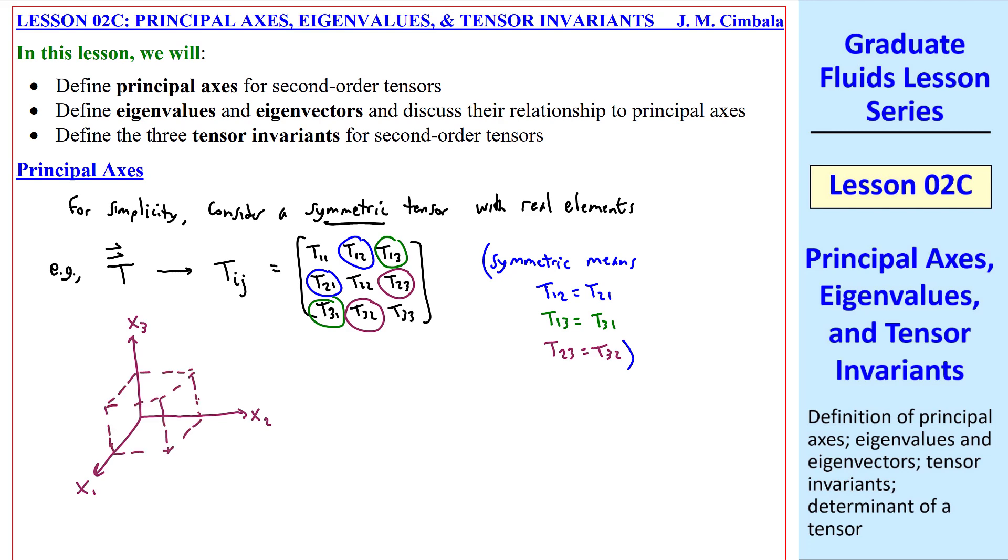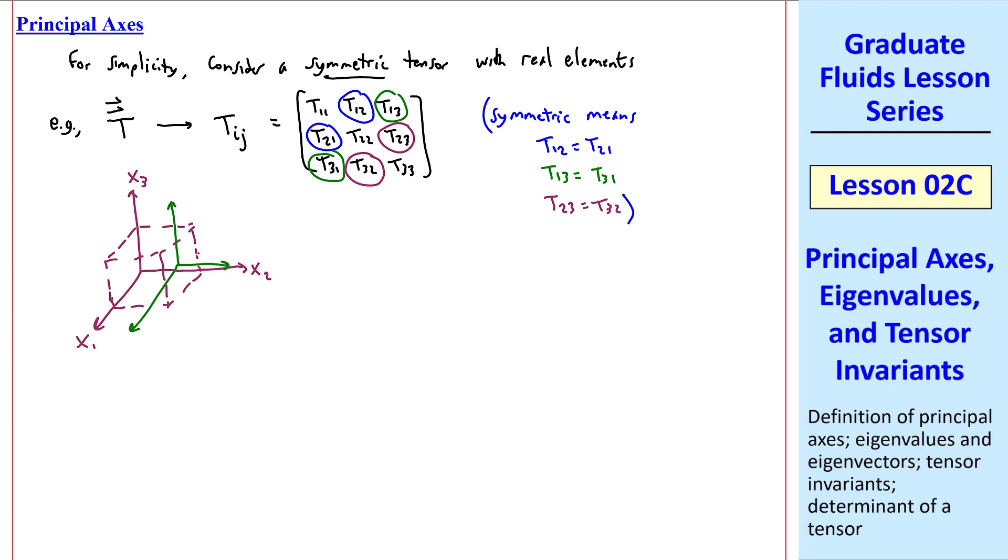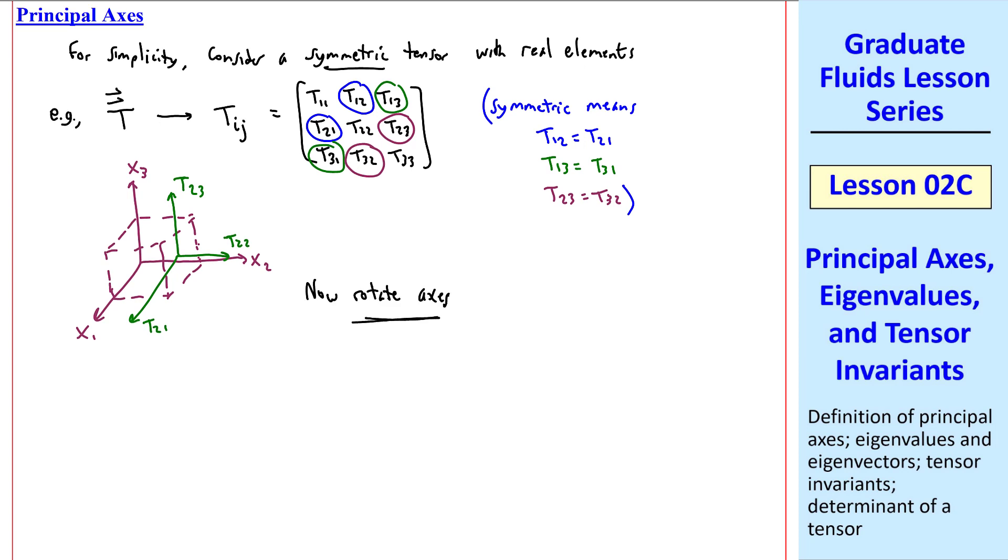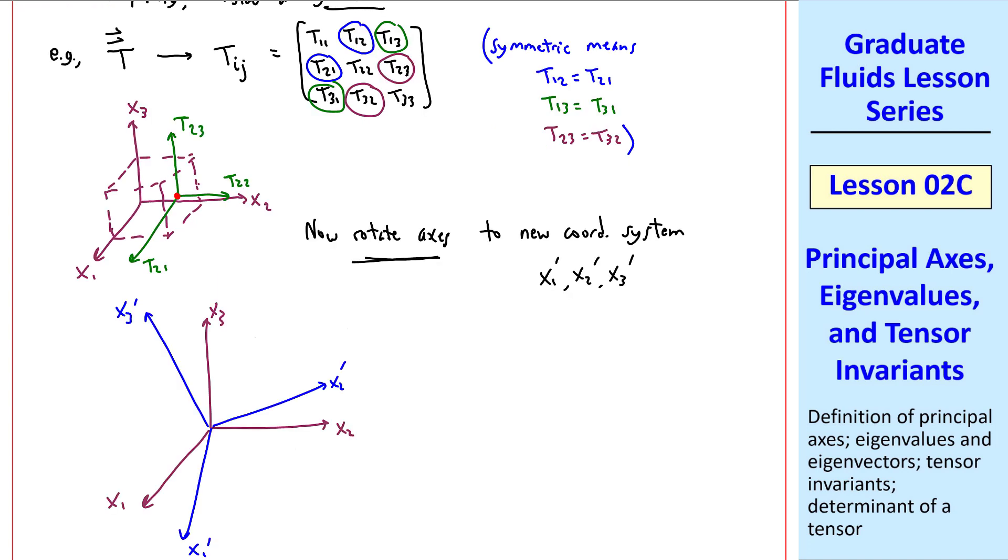On the right face of this little element, there are three components of Tij, T21, T22, and T23. Now let's rotate the axes to a new coordinate system, X1', X2', and X3'. We draw our new coordinate system in blue, and a box to try to illustrate three dimensions. At the same point on this face, the components are T22', T23', and T21'. The components of the tensor change in both magnitude and direction compared to the original components. But the tensor itself does not change.